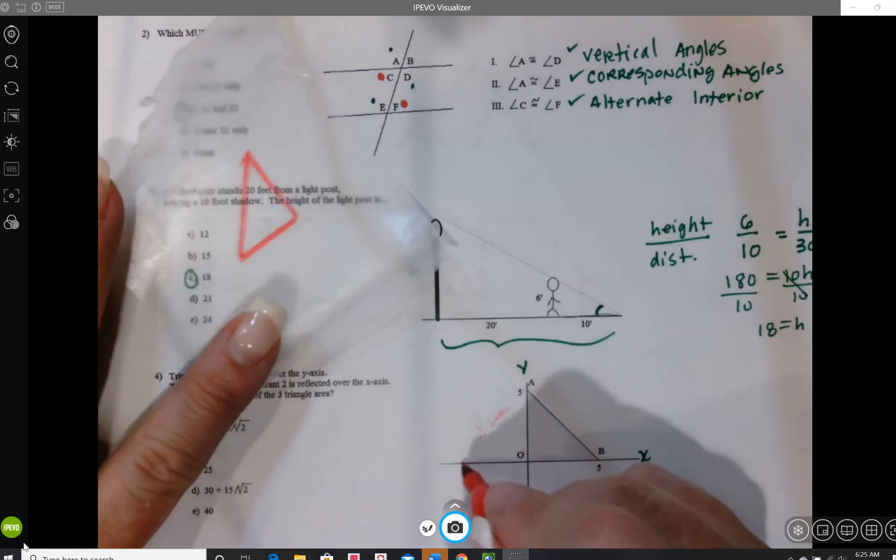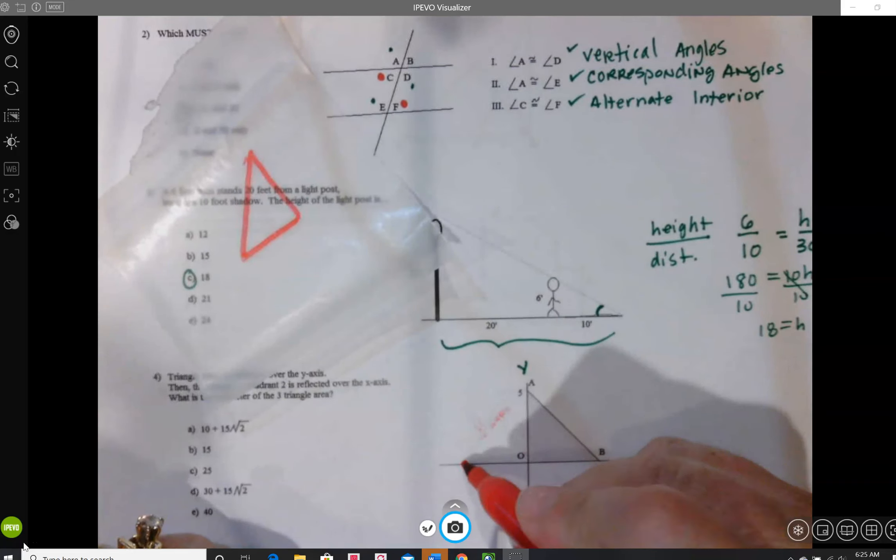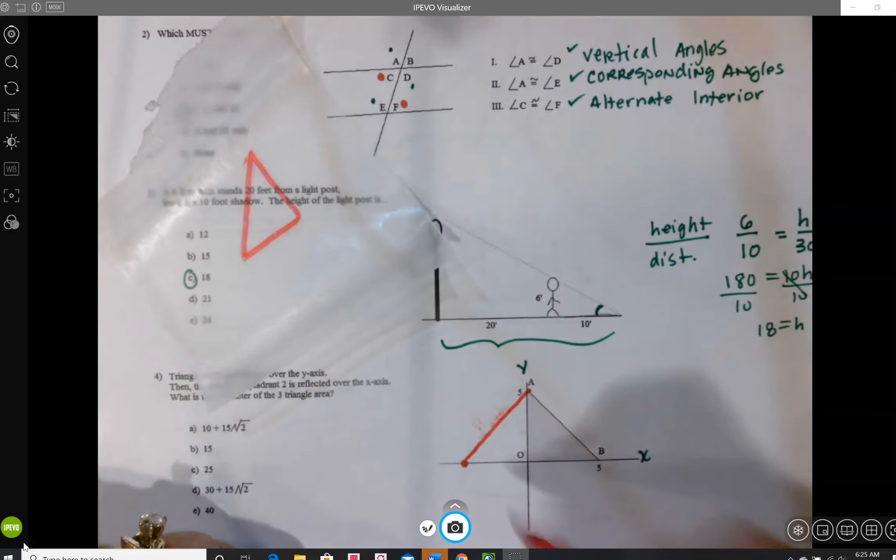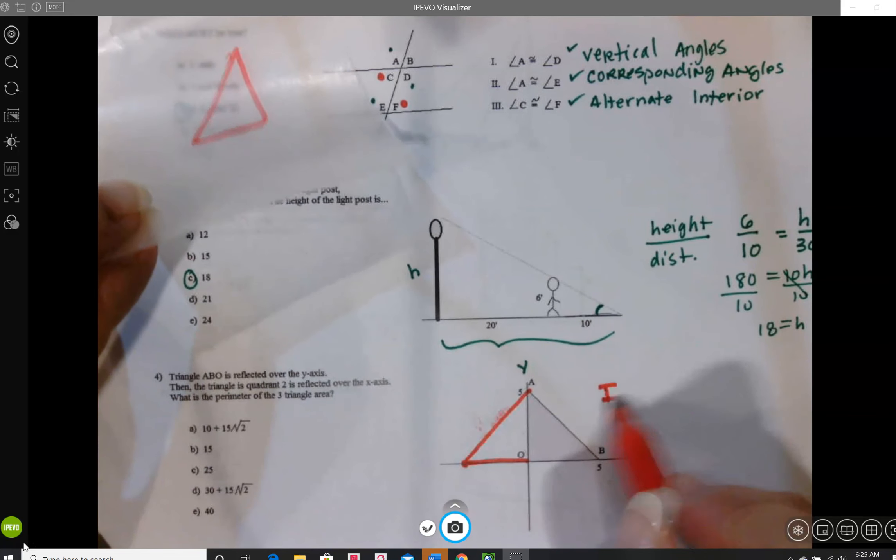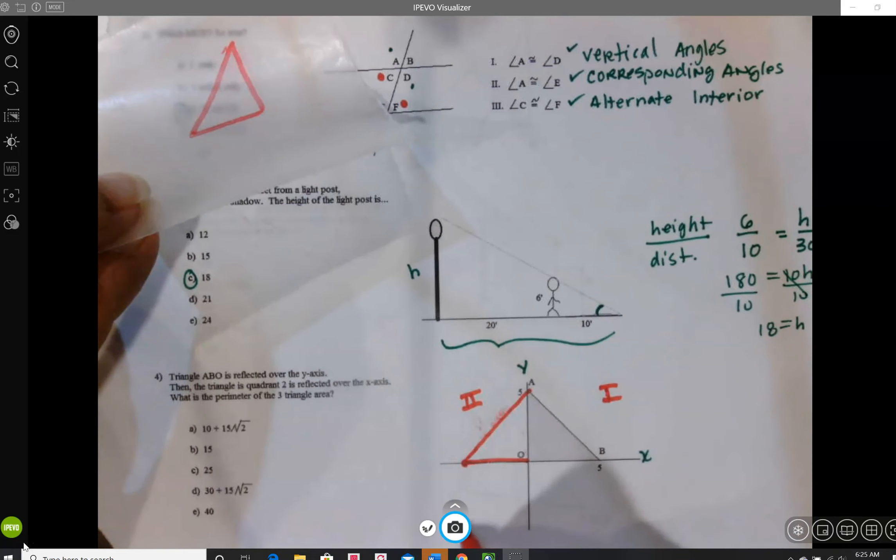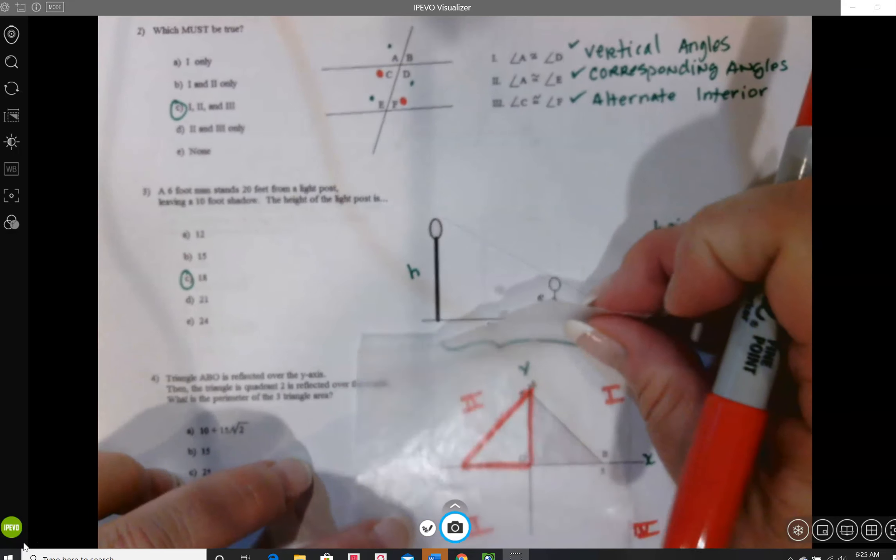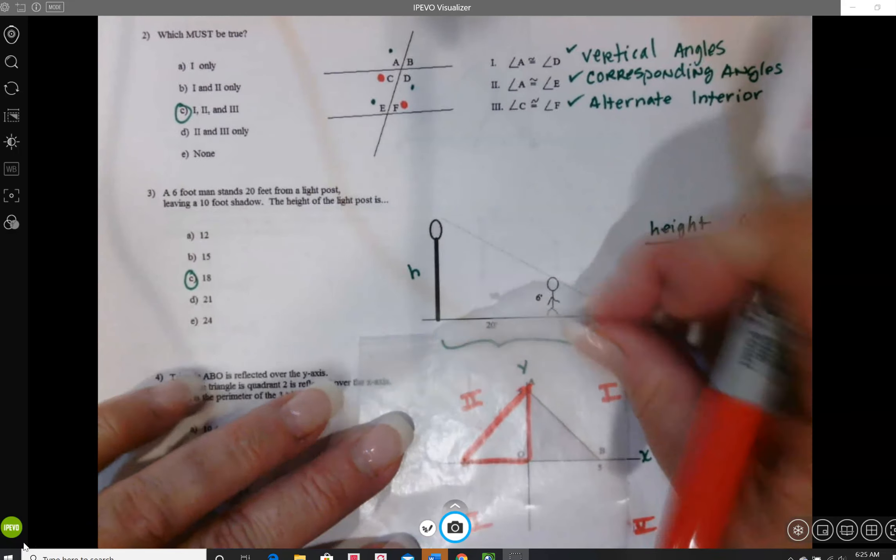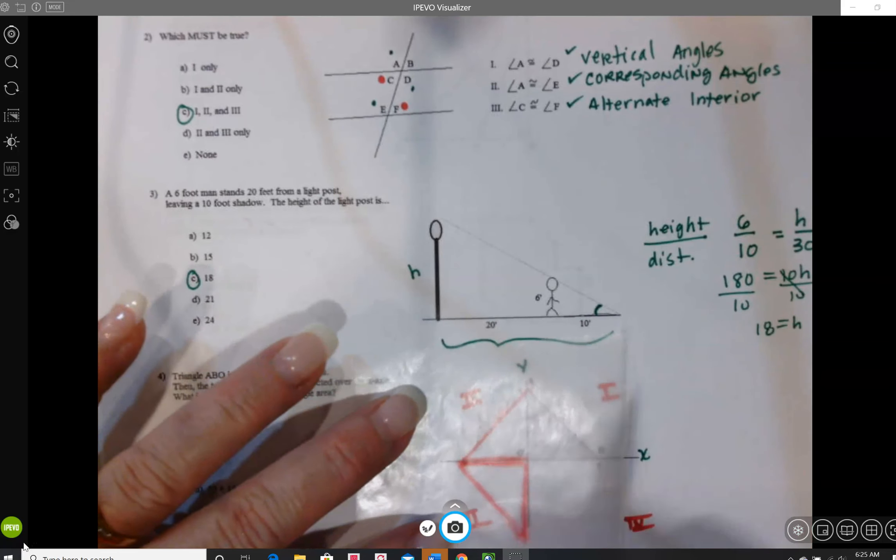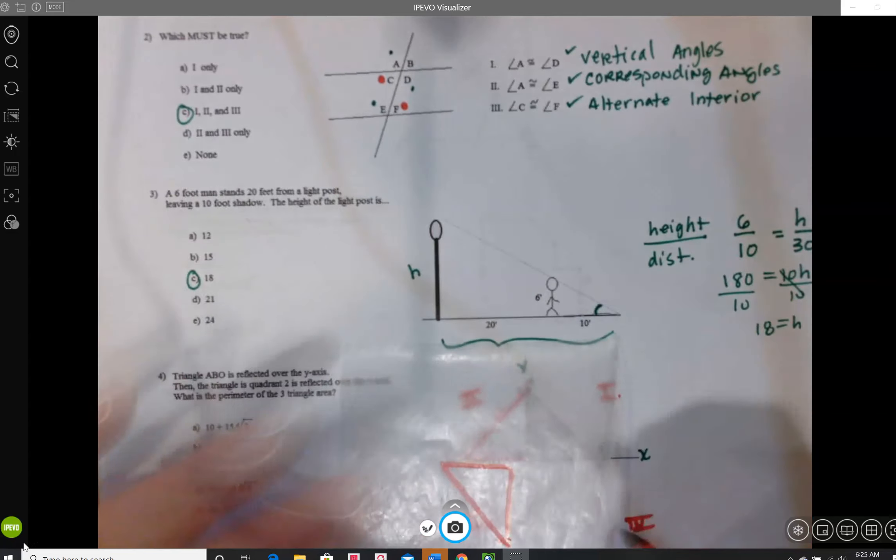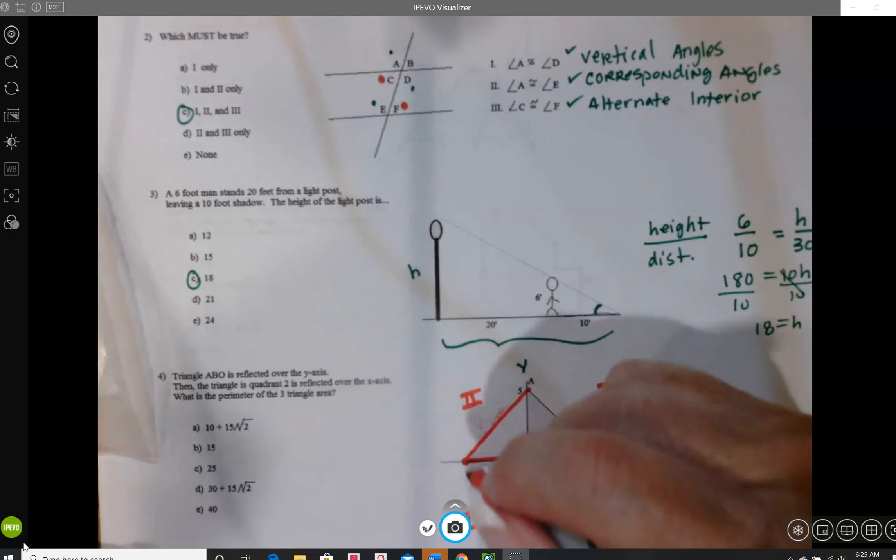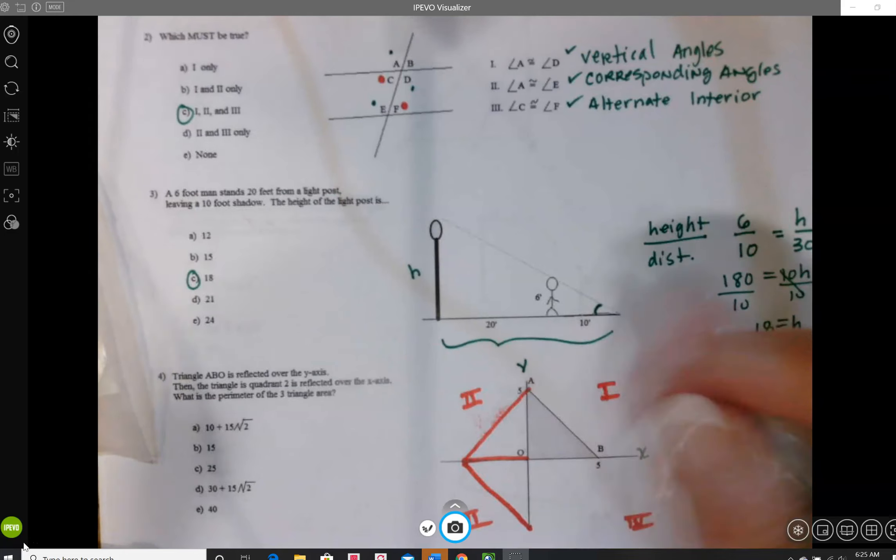Okay, so I'm going to put a dot there, and I'm going to just draw another triangle. And then the triangle in quadrant 2, so remember your quadrants. Here's 1, 2, 3, and 4, is reflected over the x-axis. So I'm going to take it again, and this time I'm going to flip it over the x-axis. So that's going to go down there, and I'm going to put another dot and draw that triangle in.